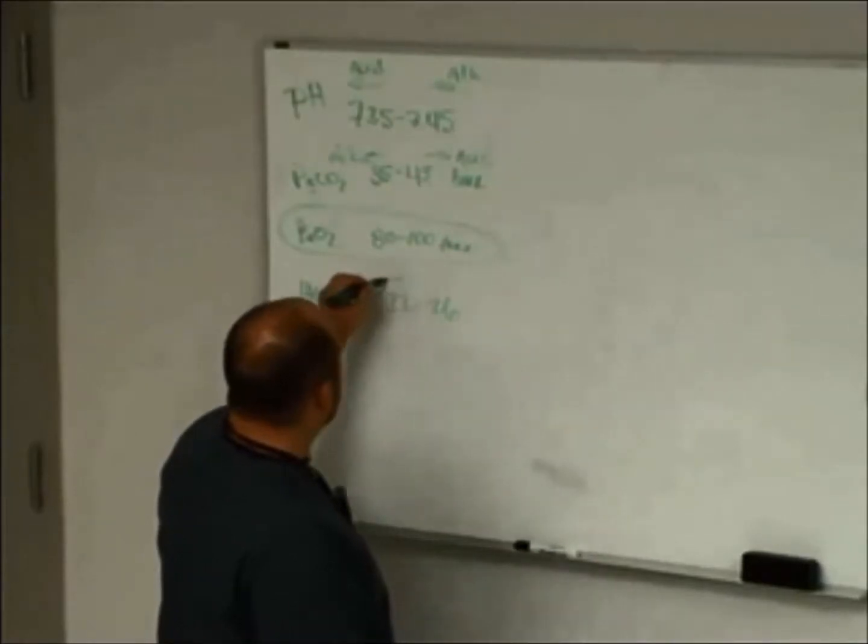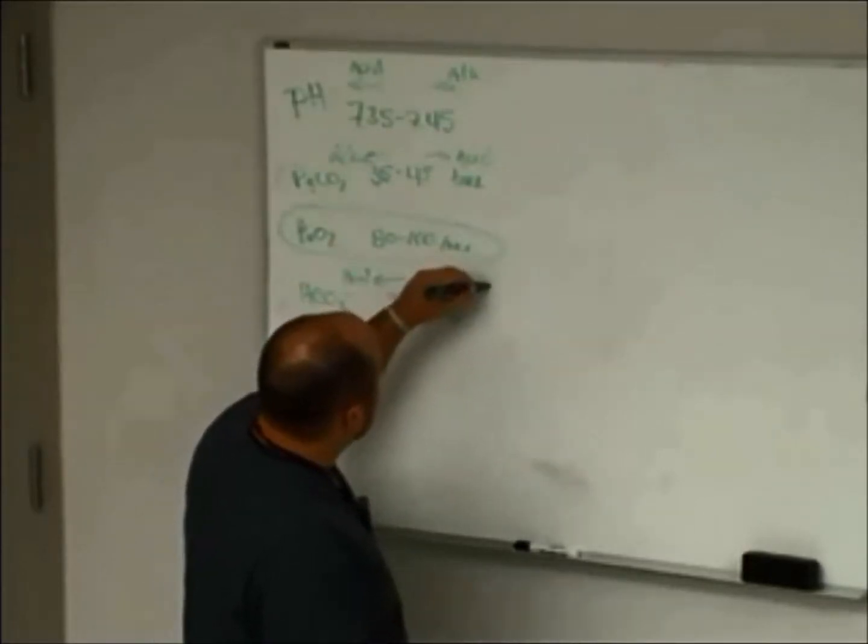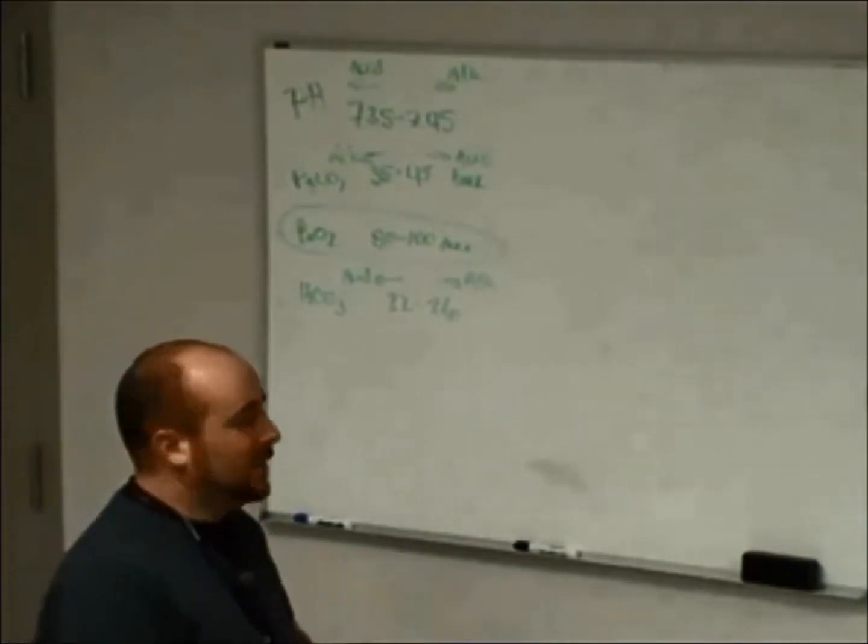Now, with bicarb, let's go above and below that also. So below it's going to be acid and above it's going to be alkalinic. So this is going to help me get my initial reading of an ABG.